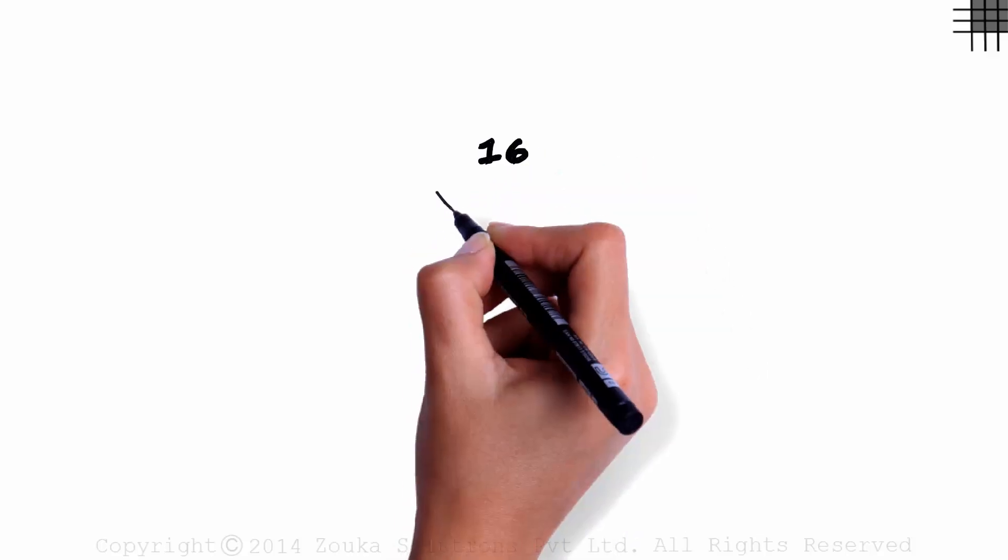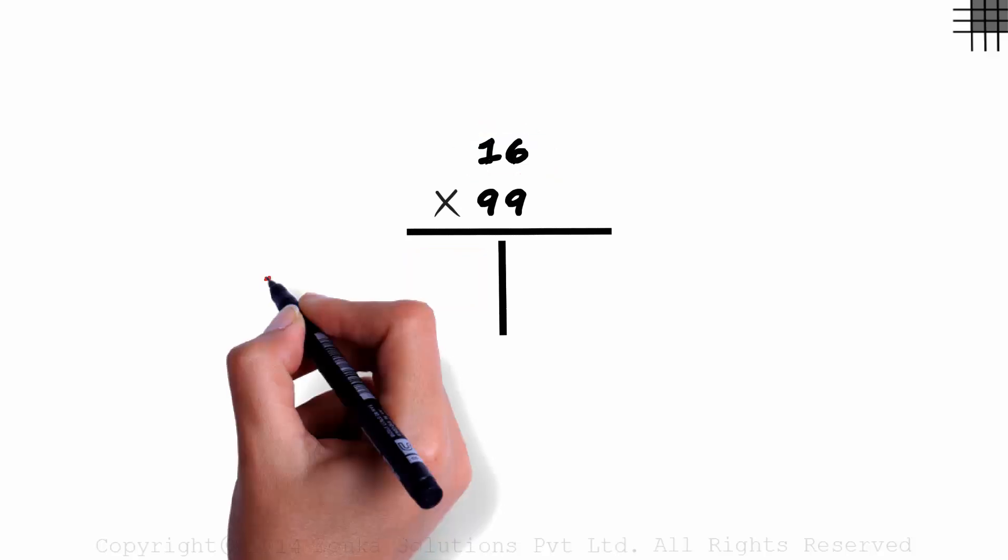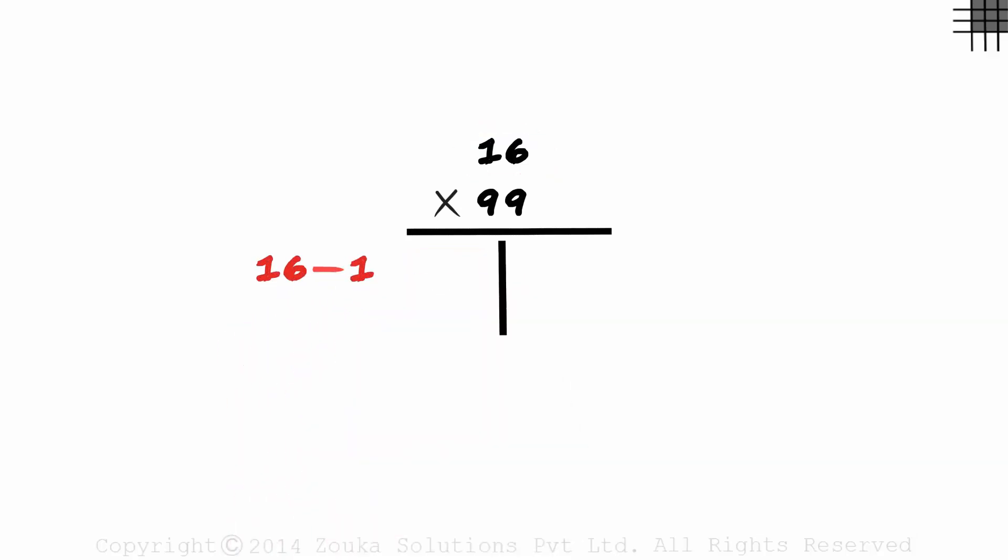We try out smaller numbers first. Sixteen multiplied by ninety-nine. First, we make a partition. To get the number on the left, we subtract one from sixteen. Sixteen minus one? We write fifteen here.